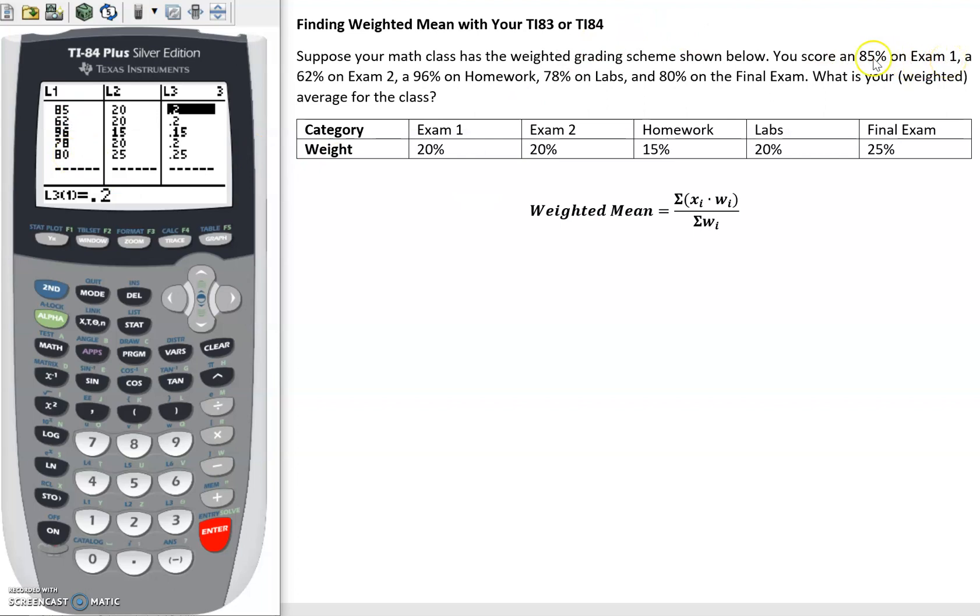So exam 1 is first in our scores. It's also first in the table. Then exam 2, okay, exam 2. So go down the list, make sure those are lined up. We don't want to have in our lists in the calculator the wrong scores aligned with the wrong weights. So make sure those are lined up before we calculate anything.